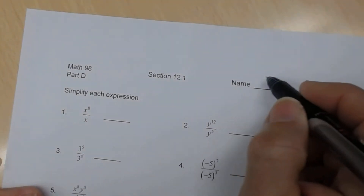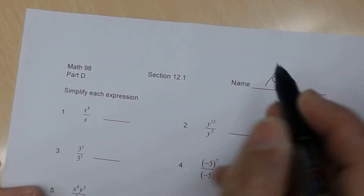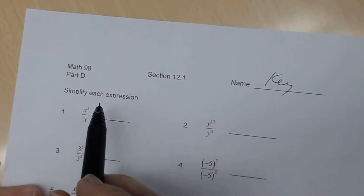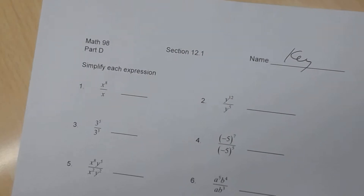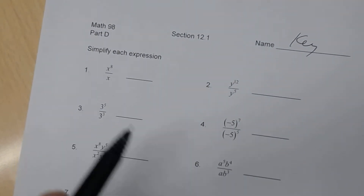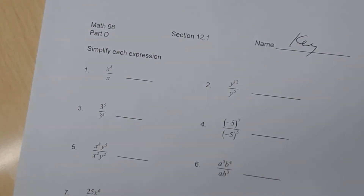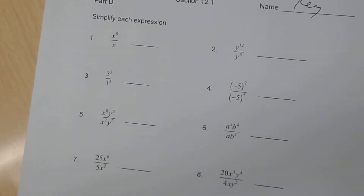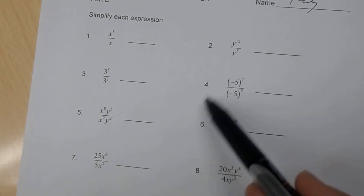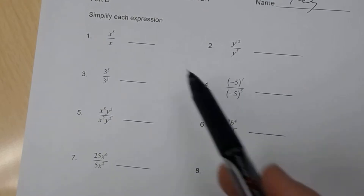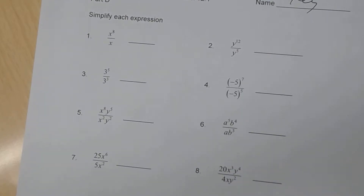This is the key to worksheet 12.1, part D. So for number 1 through 10, you're going to use the quotient rule for the most part in all of these.